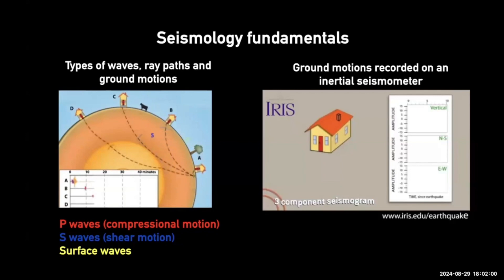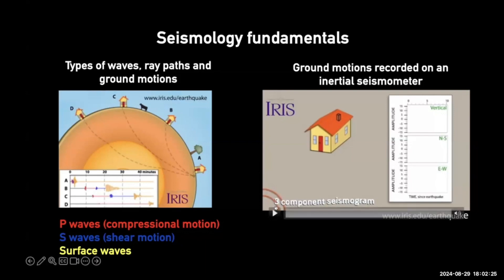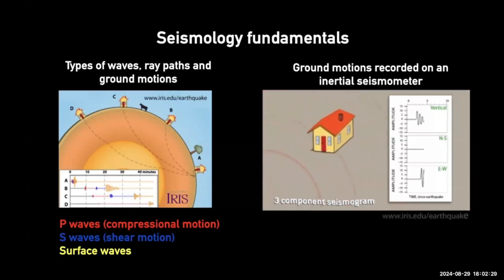When an earthquake happens, these different waves travel through the Earth's interior; some travel around the surface. The different ways the houses move shows how the ground responds to different waves. That's how we record them at traditional seismometers. Each seismometer actually has three components — vertical up-down motion, and two orthogonal horizontal components oriented north-south and east-west. We can use these three components to deconvolve what the seismic wave is doing through the Earth's interior and use that for many different techniques.